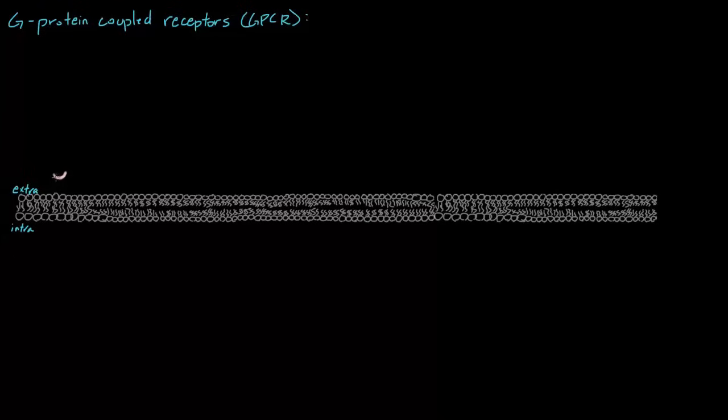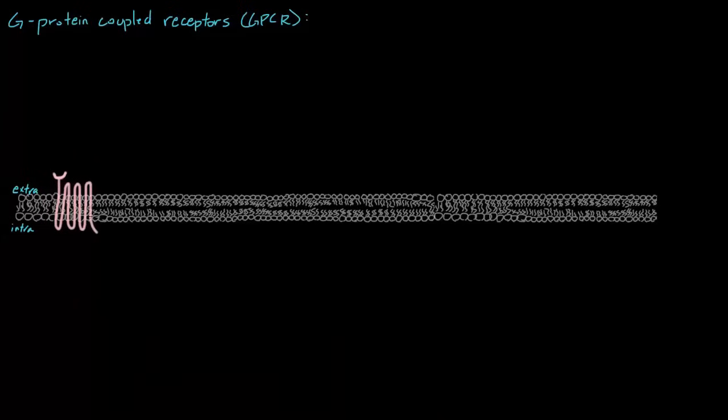So let's say it starts here, and we go one, two, three, four, five, six, seven. This is one of the most important characteristics of a GPCR. They have seven transmembrane alpha helices.